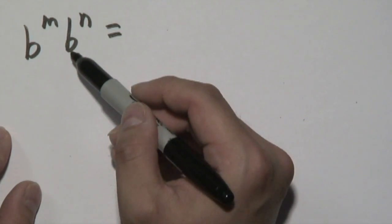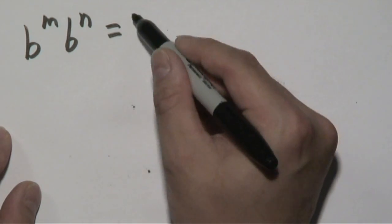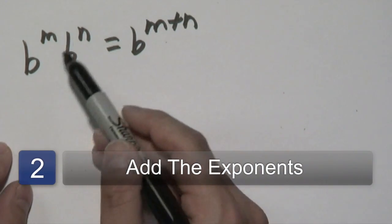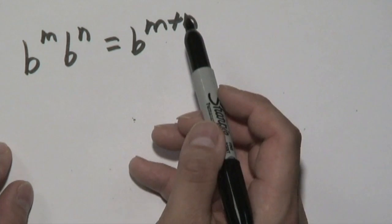But if you have two terms with the same base multiplied with each other, you would add those exponents. So multiplication of like bases is associated with addition of exponents.